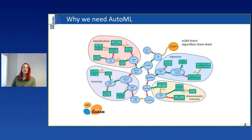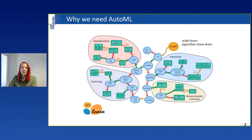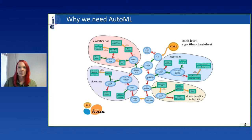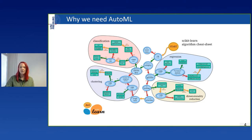Let's assume you have some data and plan to use scikit-learn. You read through the docs and stumble across this cheat sheet — a huge decision tree compiling many rules of thumb about when to use which algorithm. You follow a path and end up with a model to use. While this is a good starting point, there are many more decisions to be made in order to find the best performing model. Wouldn't it be great if something automatically did these for you?